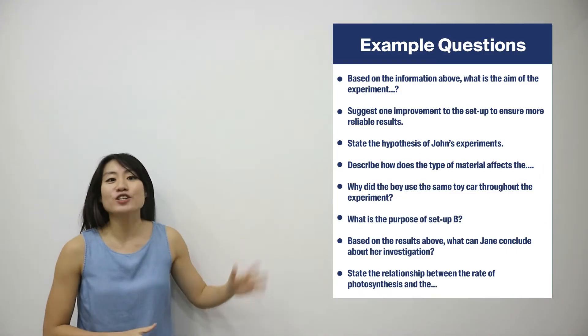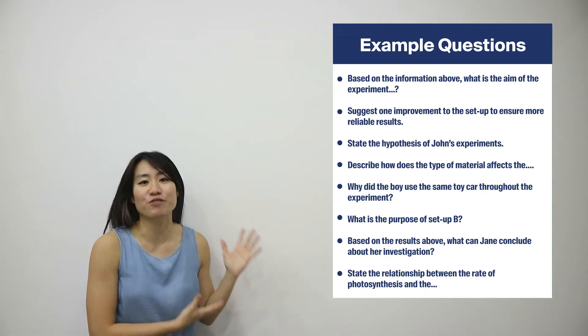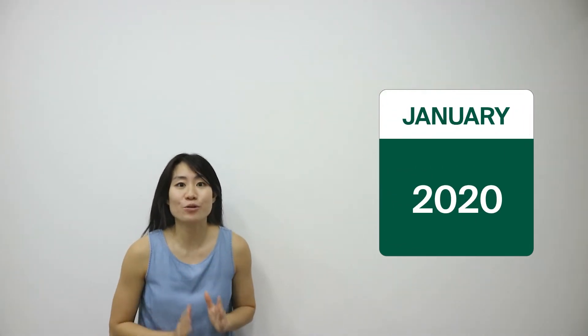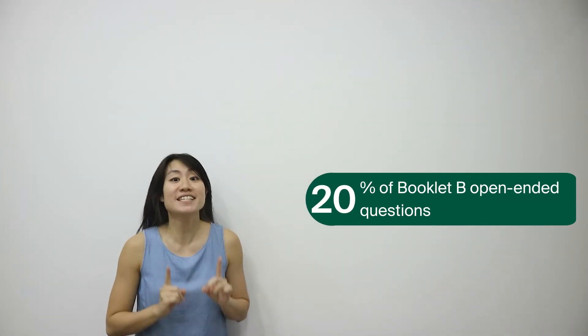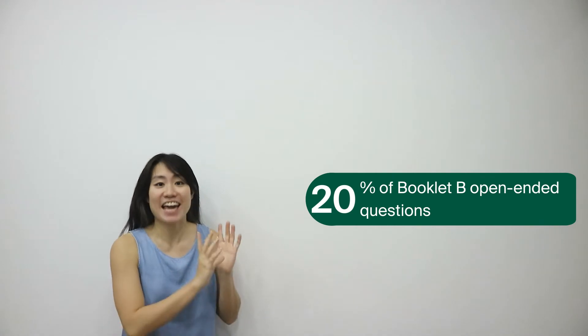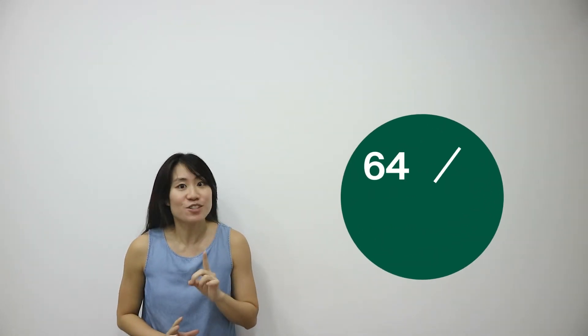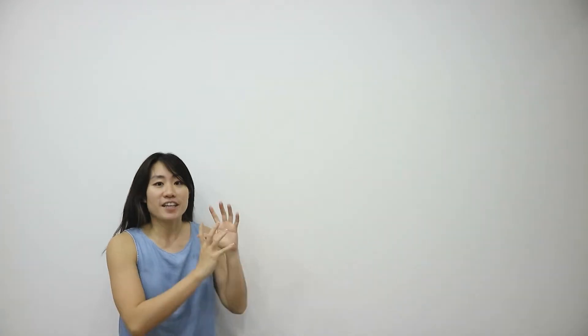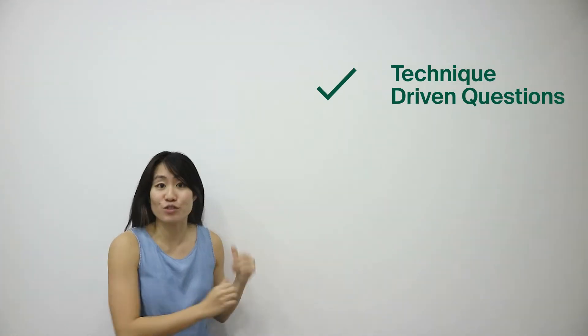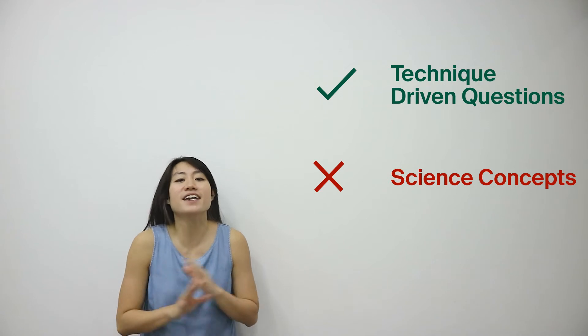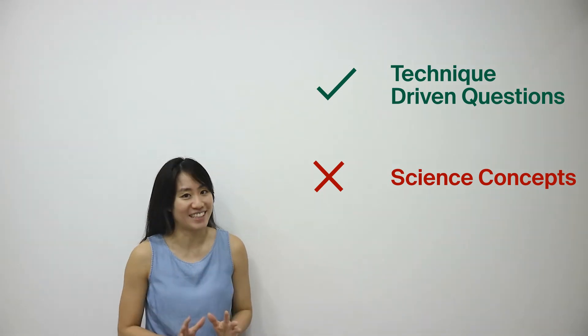And these are some of the questions that I'm sure you'll find very familiar. We did our thorough analysis and in the year 2020, about 20% of these experimental setup questions were tested in Booklet B. Now that is a lot and that's great because these are so easy to score.